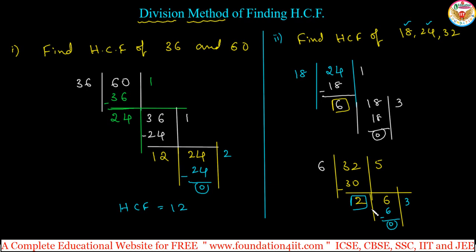In the last step, the divisor is 2. Therefore, HCF is equal to 2. This 2 is the highest common factor for all three numbers — 18, 24, and 32 together. This is the division method to find the HCF. Now let us start LCM also, with three different methods.